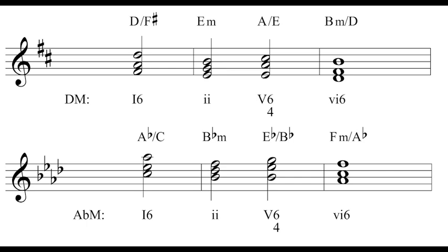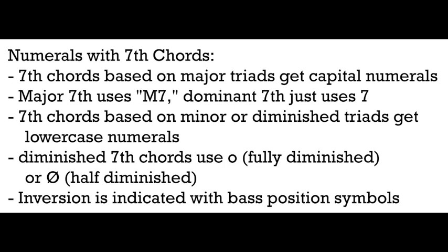Let's talk about seventh chords and Roman numerals. Most of this is the same as triads — we still identify the chord and find the scale degree of the root. For quality: seventh chords based on major triads get capital numerals; the major seventh chord is labeled with M7, while the dominant seventh (major-minor) just uses a 7 after the numeral. Seventh chords based on minor or diminished triads get lowercase numerals. Diminished seventh chords use either a circle for fully diminished or a circle with a slash for half diminished. Inversions are again indicated with bass position symbols.